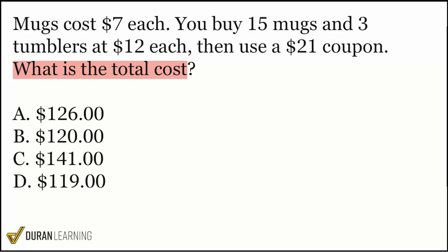It says mugs cost seven dollars each, you buy 15 mugs and three tumblers at 12 dollars each, then use a 21 dollar coupon. What is the total cost? When we think about the mugs that cost seven dollars each and we buy 15 mugs, what are we going to do? When we're trying to achieve the grand total that's multiplication. Seven dollars for each mug times 15 mugs gives you the grand total cost of the mugs.